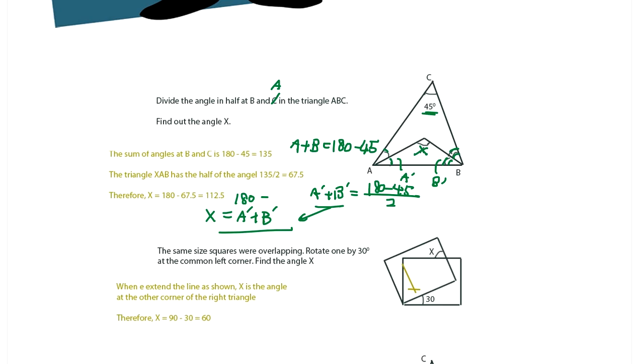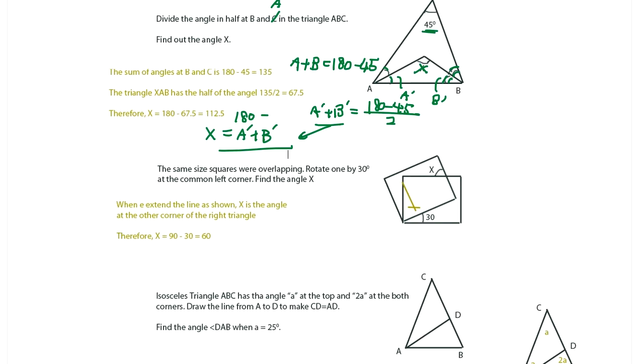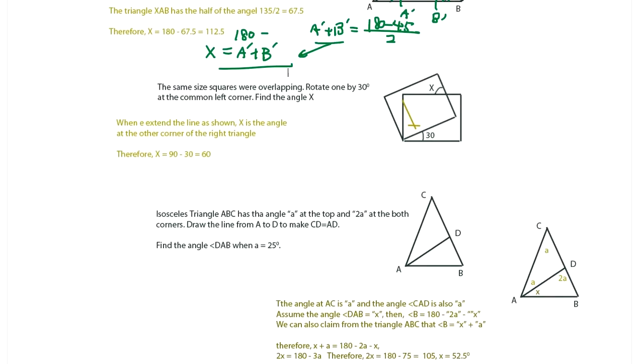The same square were overlapping. Rotate one by 30 degrees. And find out the angle here, X. Well, geometry questions often you have to figure out where to add a line segment in order to prove. And that's the key. For this example, what you do is you add a line segment here.